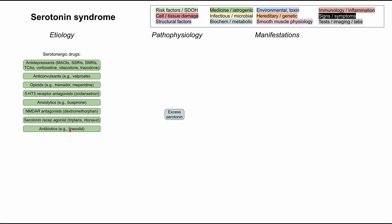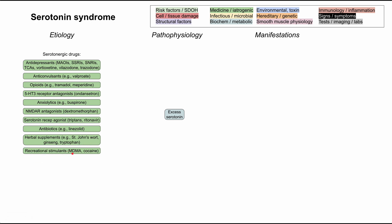Some antibiotics like linezolid. Some herbal supplements like St. John's wort, ginseng, and tryptophan — serotonin is actually made from the amino acid tryptophan, so that makes sense. Lastly, some recreational stimulants like MDMA and cocaine can all cause serotonin syndrome.